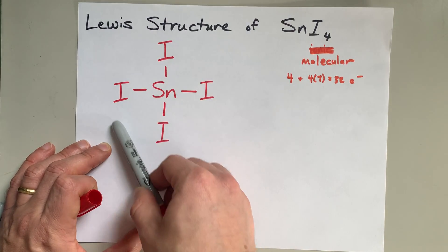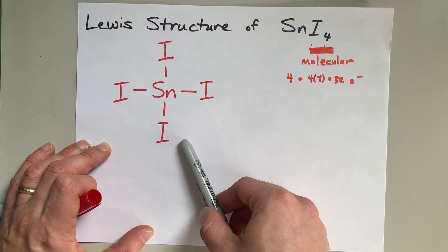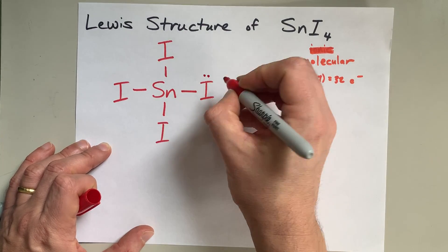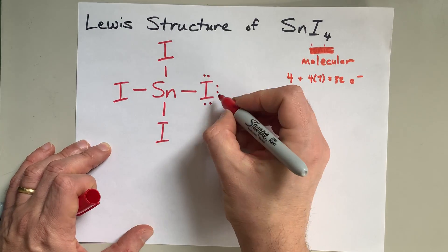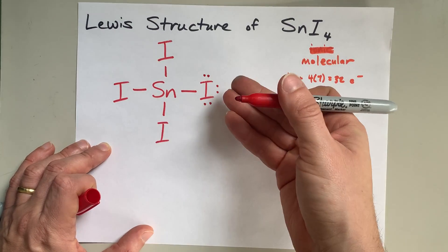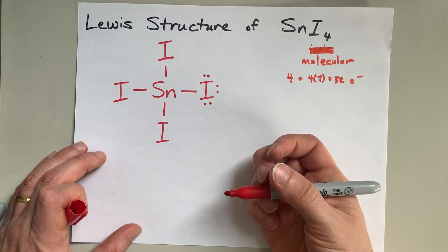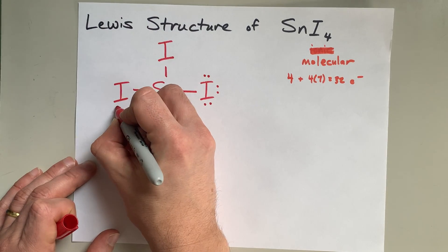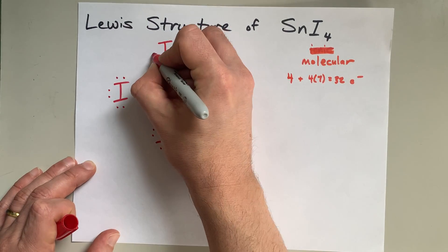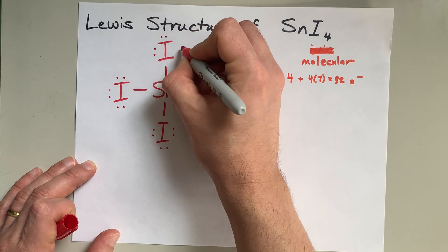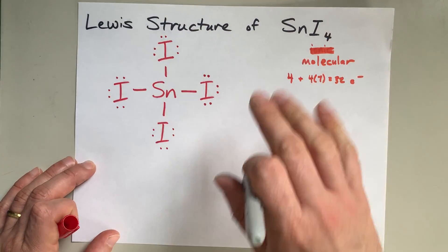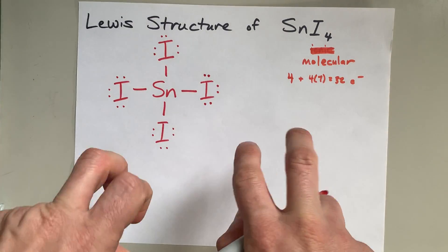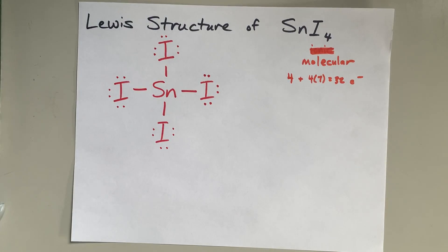Then I'm going to complete the octet on the outer atoms. I have eight electrons so far, and I continue counting up — 9 through 32 — filling in the lone pairs on each iodine. This iodine now has eight electrons around it, and so it's happy and stable. Continuing across all four iodines until I reach 32 total — that's it. That's the total number of electrons that this structure brought with it, rearranged to form a molecule.